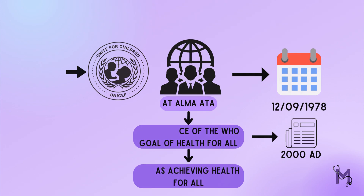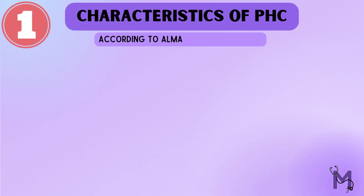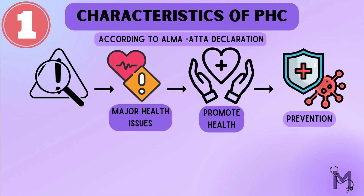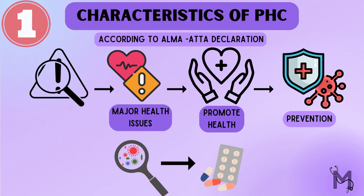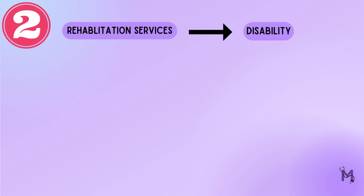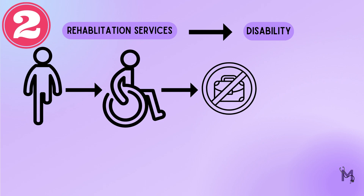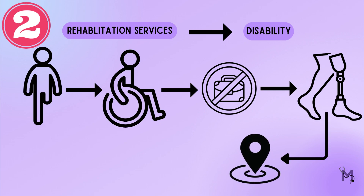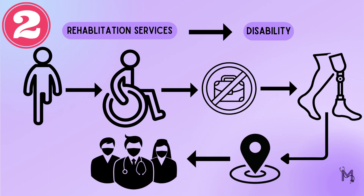We will now look at the characteristics of primary health care according to the Alma Ata declaration. First, we should start by addressing the primary or major health issues — to promote health, prevent diseases, and if they have already occurred, provide a remedy. It also involves providing rehabilitative services for people with a disability, such as those who have lost a limb and hence lost their jobs. Next, to provide these health services we rely on health workers at the local level, including physicians, nurses, auxiliaries, trained midwives, and community workers.